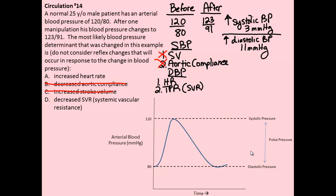When you increase the heart rate, the heart always spends about the same amount of time in systole, but you spend less time in a relaxation period after each beat. That would actually decrease our diastolic period — the amount of time the heart spends relaxing between contractions. On the diagram, it's like cutting off the cardiac cycle and eliminating that tail.